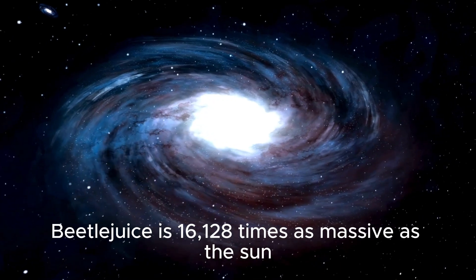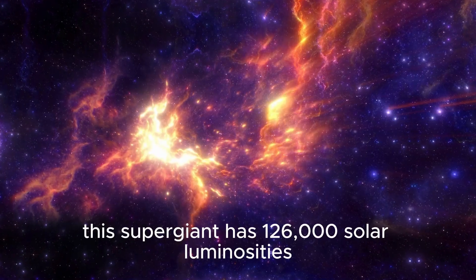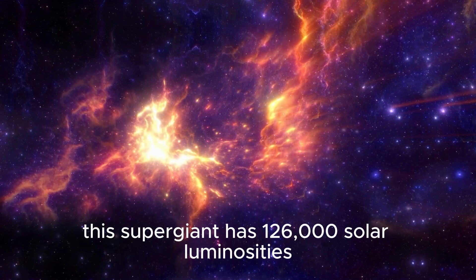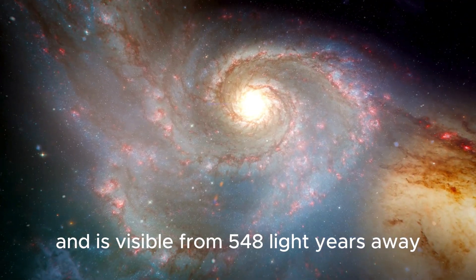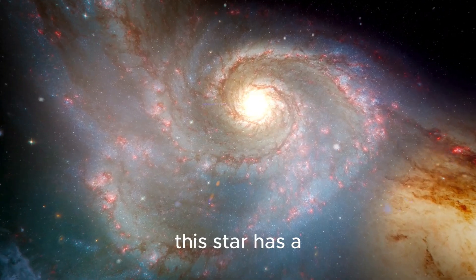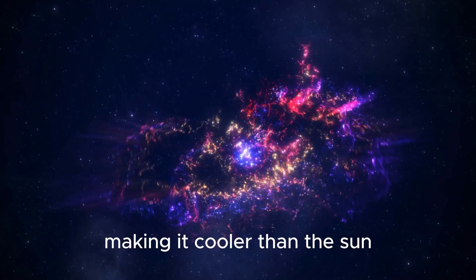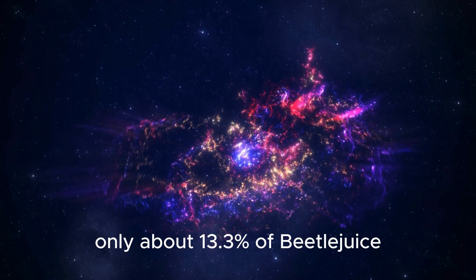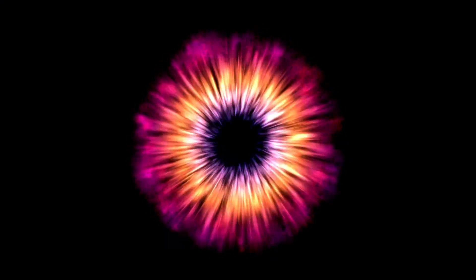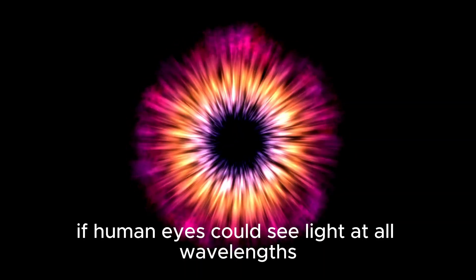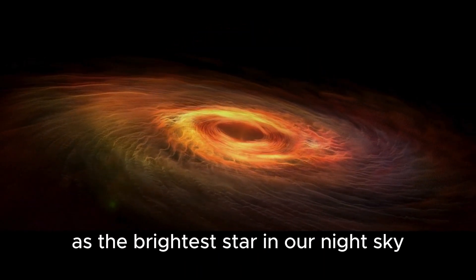Betelgeuse is 16,128 times as massive as the Sun. This supergiant has 126,000 solar luminosities and is visible from 548 light-years away. This star has a surface temperature of about 3,600 Kelvin, making it cooler than the Sun. Only about 13.3% of Betelgeuse's radiant energy is visible light. If human eyes could see light at all wavelengths, Betelgeuse would overtake Sirius as the brightest star in our night sky.